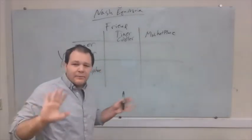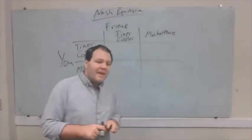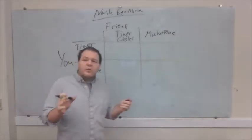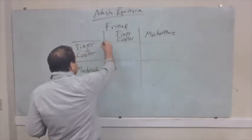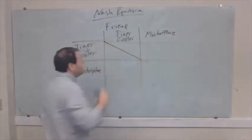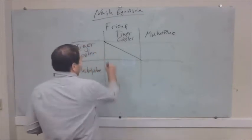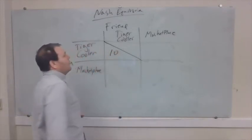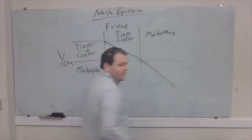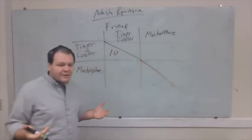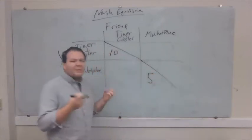Some of you might have different food preferences, but if you're like me, you might think of that kind of weird, greasy pizza at Tiger Cooler as just the best thing in the world. So let's imagine that if your friend is at the Tiger Cooler, going to the Tiger Cooler gives you a utility of 10, whereas if your friend is at the Marketplace, going to the Marketplace alongside your friend gives you a utility of 5. You like it, but you really want that greasy pizza.